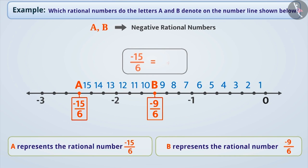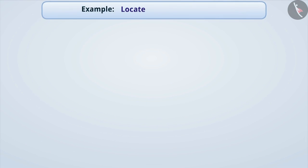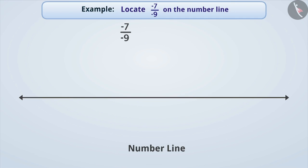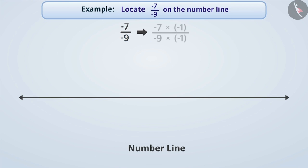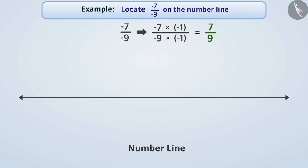We can also write minus 15 by 6 as minus 2 and a half. In the next example, locate minus 7 by minus 9 on the number line. The denominator of this rational number is not a positive integer, so first we will multiply both its numerator and denominator by minus 1 to get a rational number of the same value whose denominator is a positive integer — that is, 7 by 9.